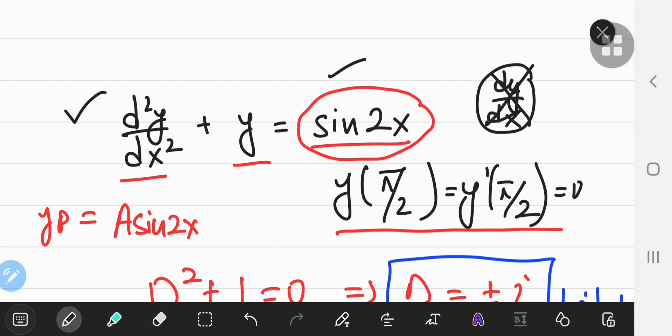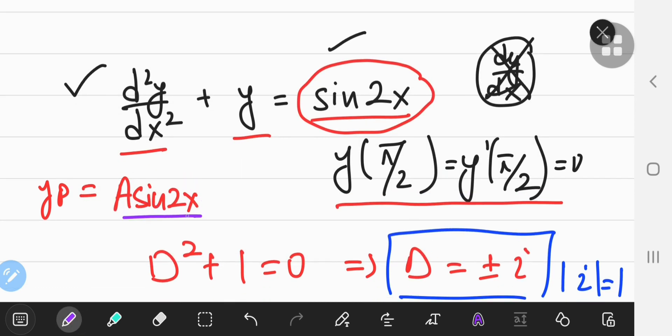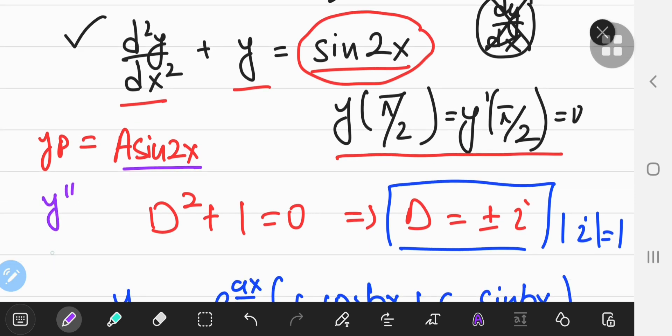In case you're wondering why, the reason is pretty simple. Look, in case you have a sine function, the first derivative is going to be 2a times cosine of 2x. And the second derivative is going to be negative 4a times the sine of 2x.